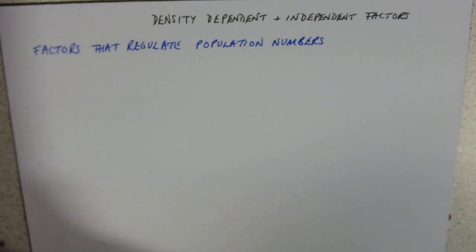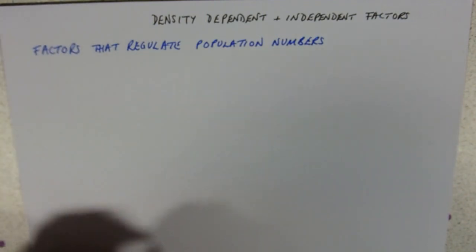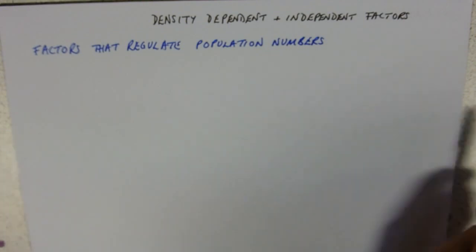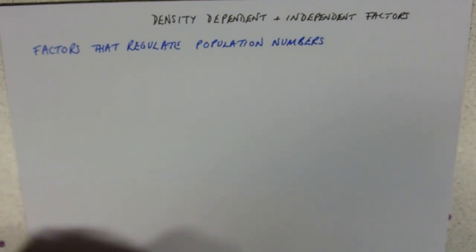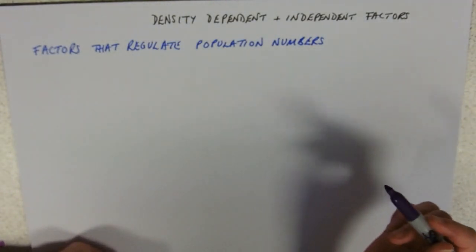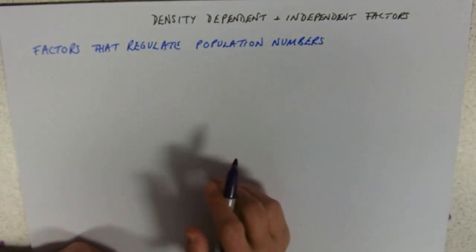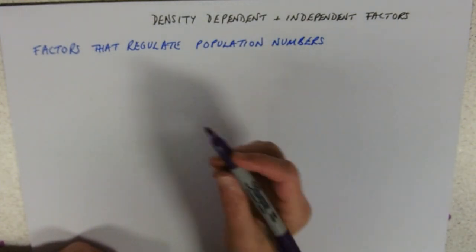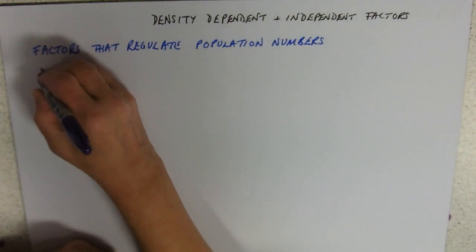So if you think about a population, it's on the increase, so you've got more individuals in your population and they are all competing for the same food source. Obviously the more of them you have, the more competition there is and the less food they get each.